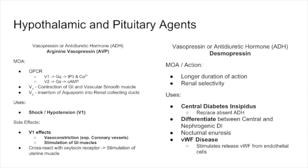Side effects of vasopressin include vasoconstriction — specifically worrying about coronary arteries and heart attack. Because it works on smooth muscle in the GI tract, you can have diarrhea and GI stimulation. Interestingly, it cross-reacts with the oxytocin receptor — since posterior pituitary oxytocin and vasopressin both stimulate uterine muscle contraction — which would not be good in a pregnant woman.